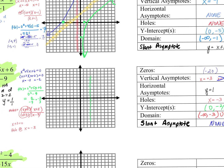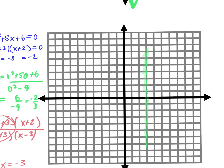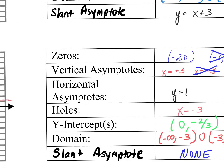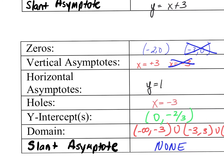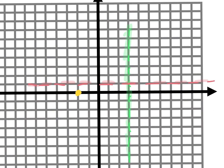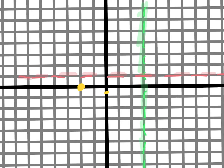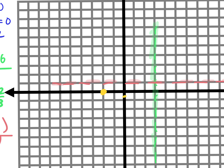Where do I have a horizontal asymptote? At y equals 1. Do I have any intercepts? Yes — at x equals negative 2 comma 0. And my y-intercept is at 0 comma negative 2/3, which is just below zero. At x equals negative 3, I have a hole — I'll put an open circle there on the graph.